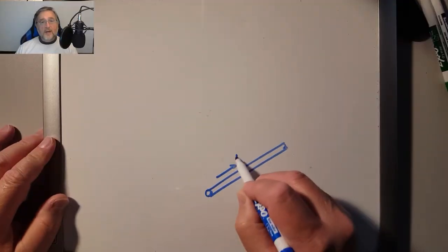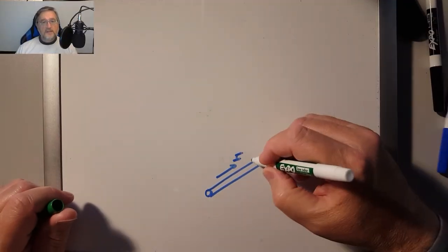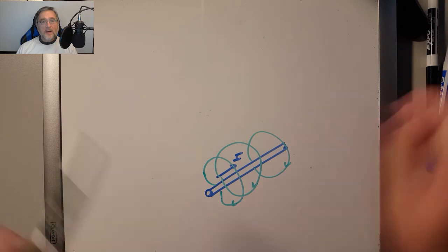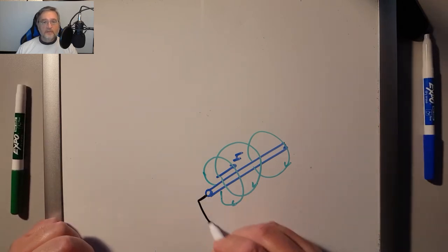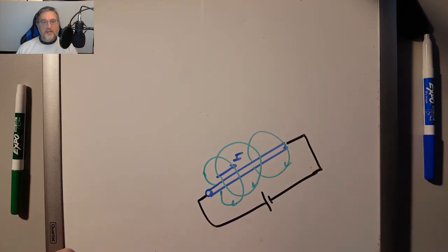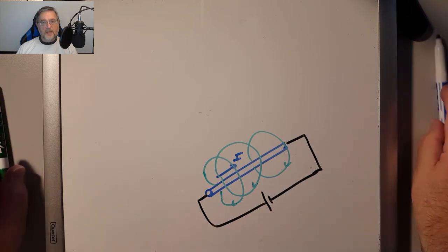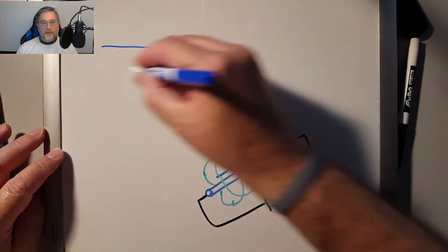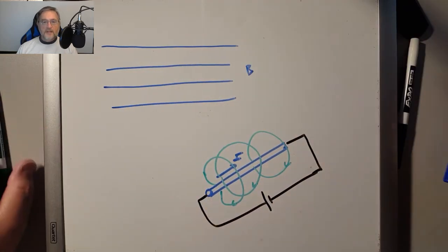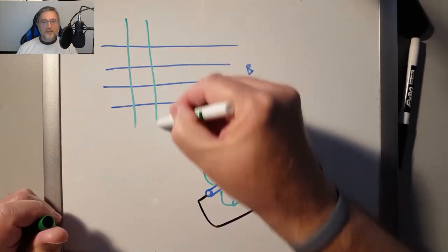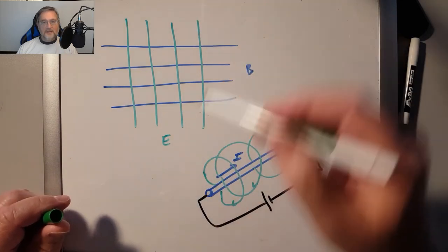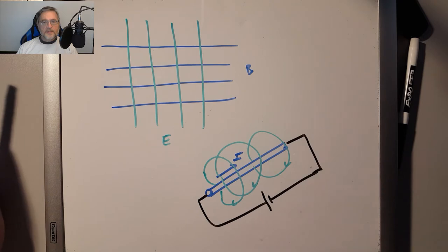Whenever a current flows through a wire, it creates a magnetic field surrounding it, and if the current is variable, so would be the magnetic field. Conversely, if we put a wire in a variable magnetic field, an electromotive force will be generated in the wire — in other words, a voltage. This voltage in turn produces a current in the wire when it forms a closed circuit, like a closed loop. Another way to describe this phenomenon: if we have a variable magnetic field in a volume of space, a variable electric field will be automatically generated in that same space. It is that electric field that generates the voltage on the wire and causes the current to flow through it. These concepts present a duality.